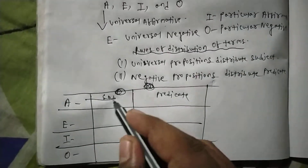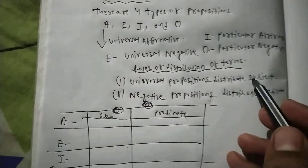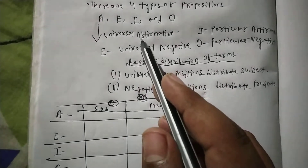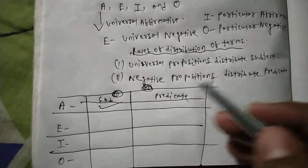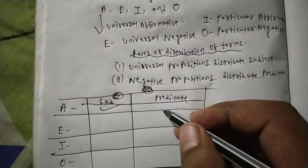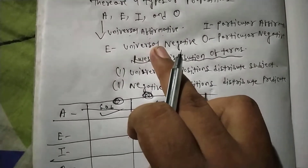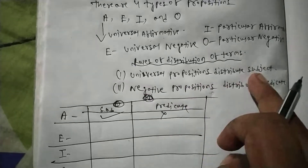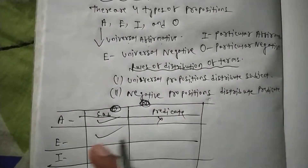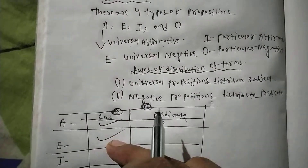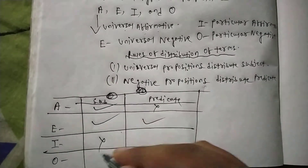A proposition is Universal Affirmative. Since A proposition is universal, it distributes the subject. E proposition is Universal Negative, so it distributes both subject and predicate. In I proposition, no term is distributed.